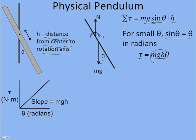So torque on the y-axis, theta on the x-axis, I'd get a straight line for small angles, and the slope would be mgH. Y equals mx plus b, so slope is mgH there.